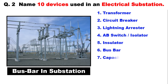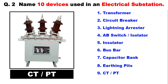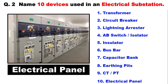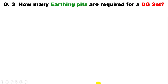Insulators are also used, as you can see here. After this, in the electrical substation there are bus bars, capacitor banks, and earthing pits. CT and PT are also there — through CT and PT, voltage and current of the incoming power supply are measured, and power consumption is also calculated using CT/PT. Besides all these, electrical panels are there in the electrical substation.